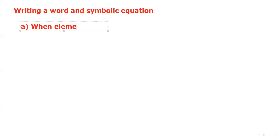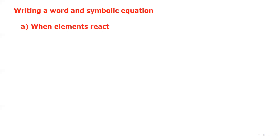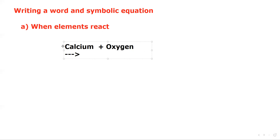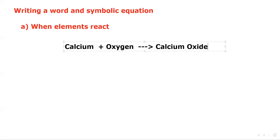The first category is when elements react with each other. For example, if we have calcium plus oxygen — what will be the product when calcium reacts with oxygen? The product will be calcium oxide. So the product is calcium oxide, and this is a complete word equation.